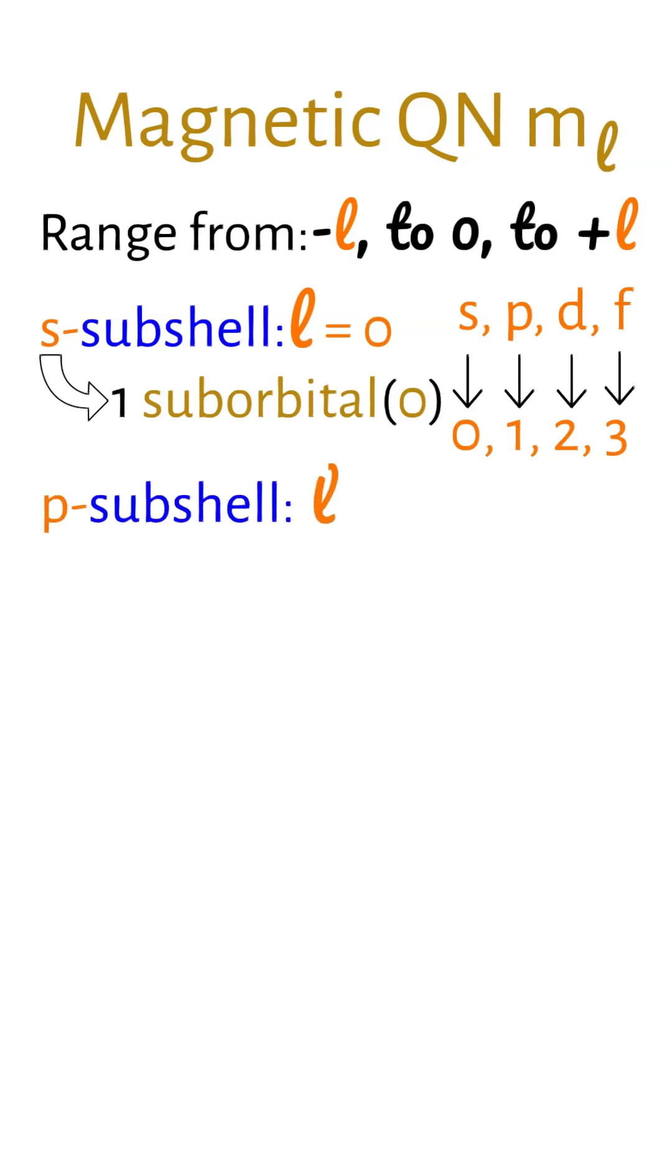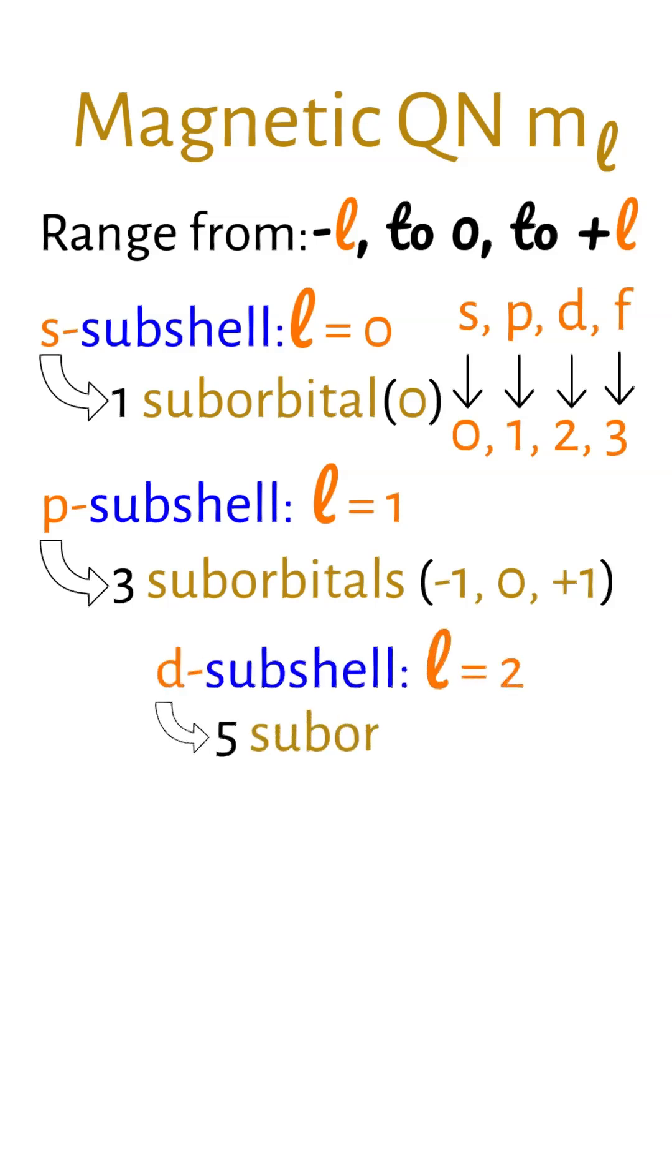A P subshell L equals 1 has three suborbitals: negative 1, 0, positive 1. And a D subshell L equals 2 contains five suborbitals: negative 2, negative 1, 0, positive 1, positive 2.